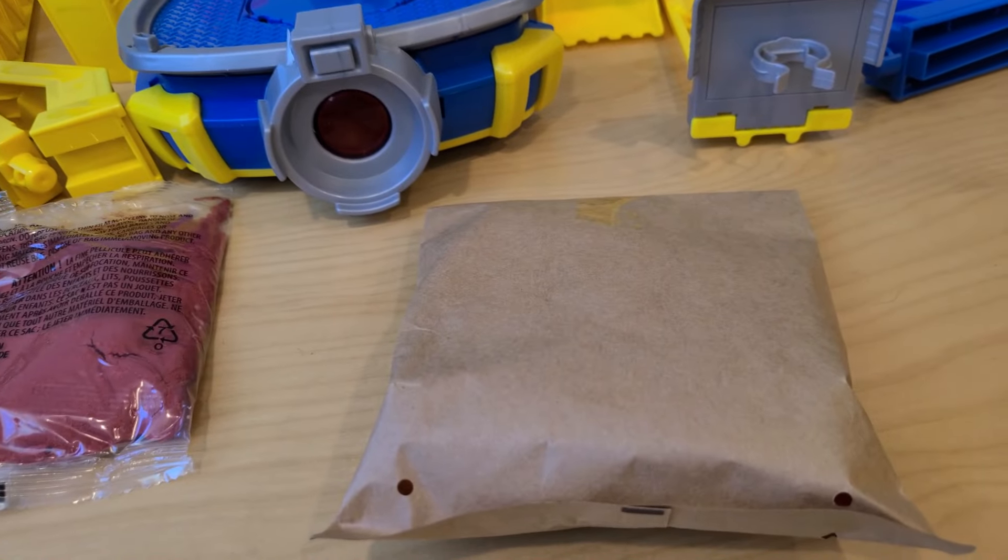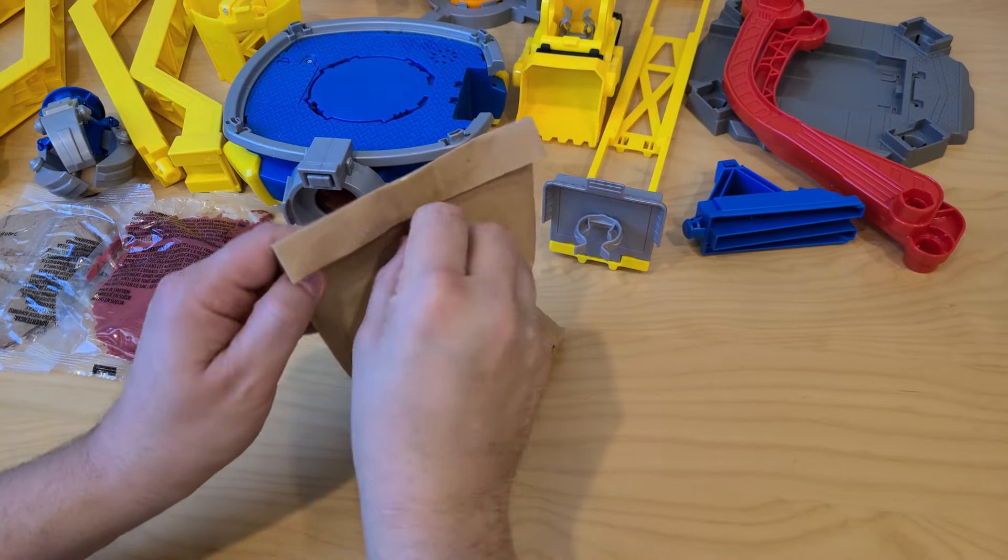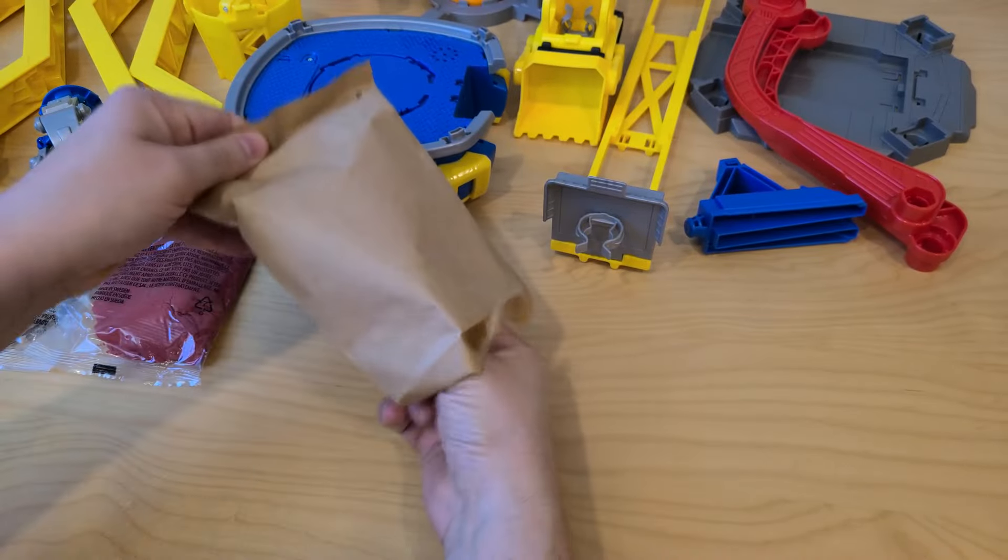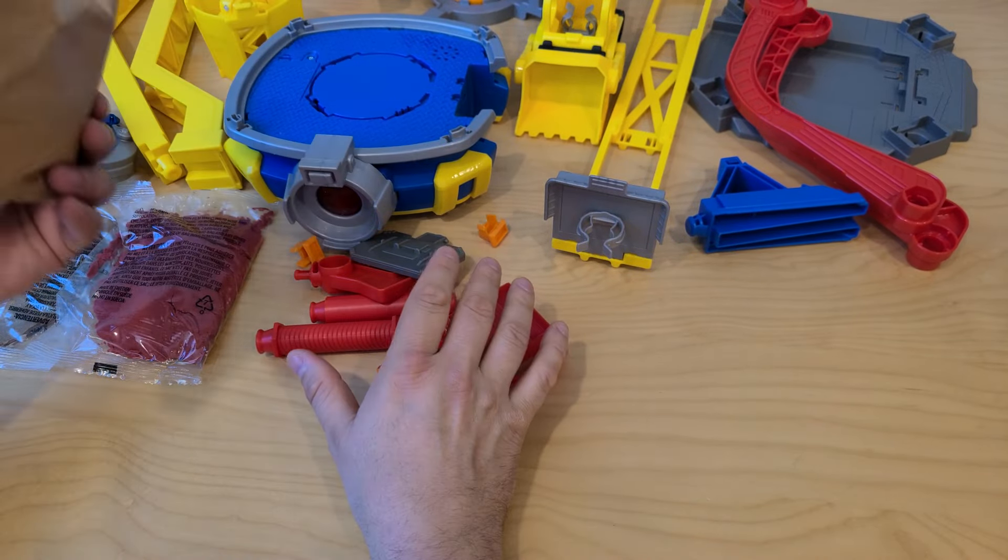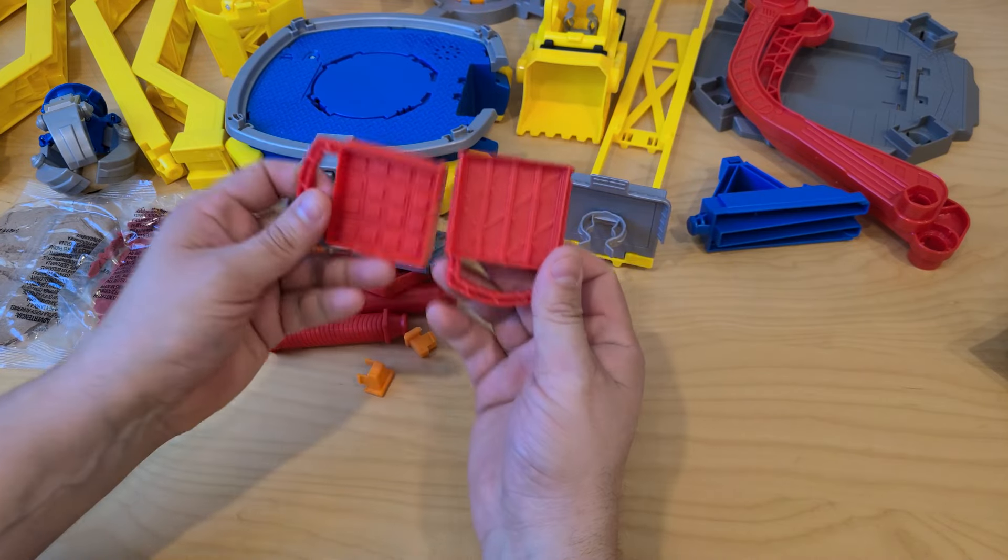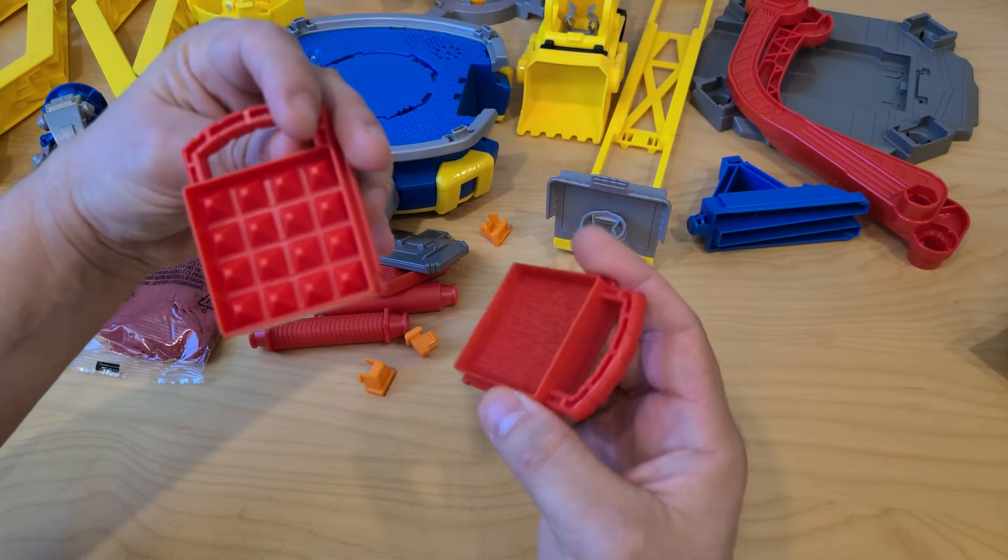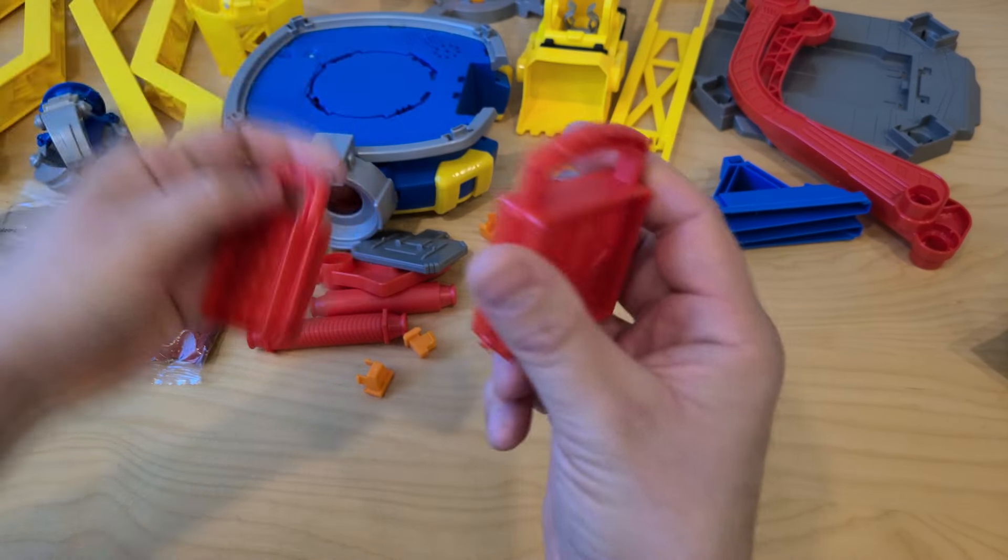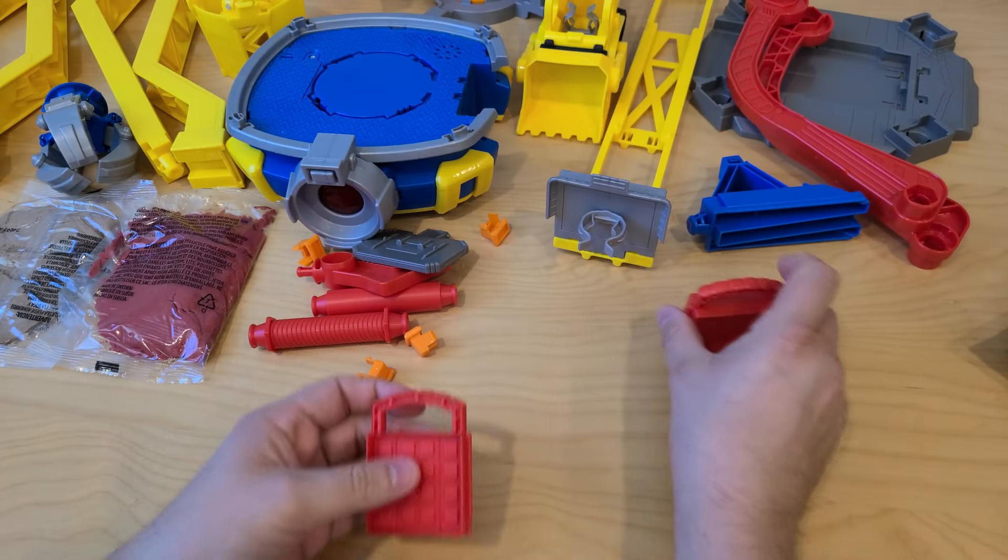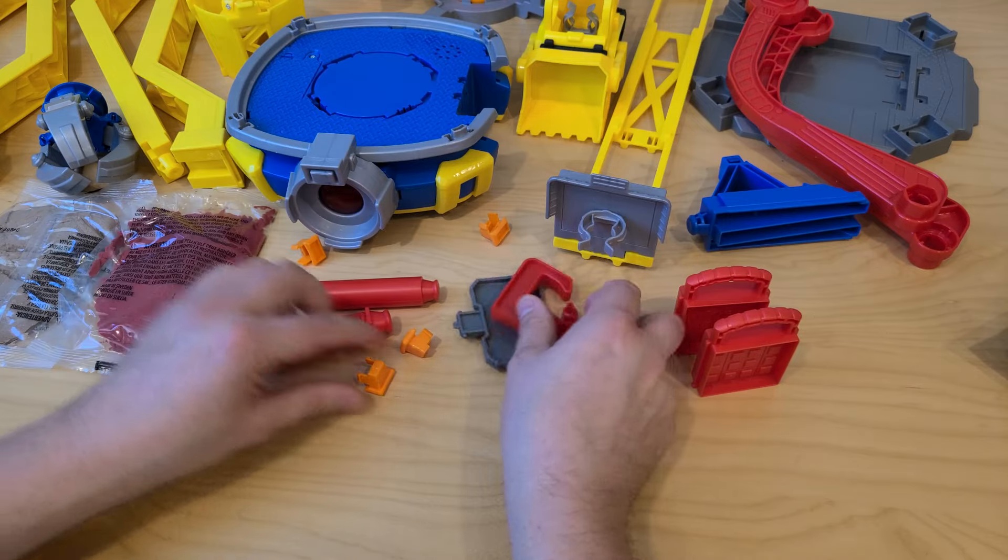But what's inside of this bag? Let's check it out. Oh we got some smaller pieces. These look like our molds for the kinetic sand itself. So we have two molds, one which looks like this on both sides and another one that looks like this. I'm going to show you how to use these and then we have some smaller pieces right here.